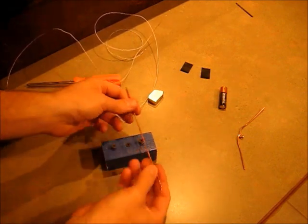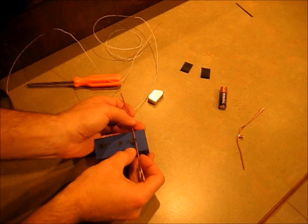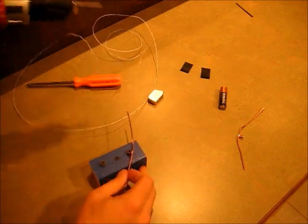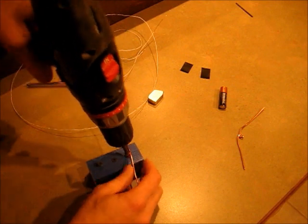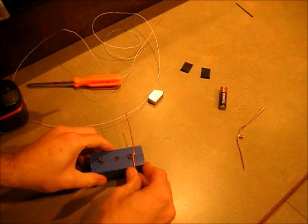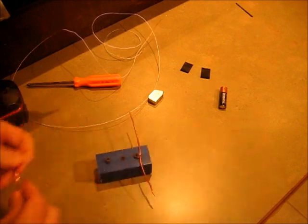Now take your copper wire and wrap it around the outside screw right about in the middle and then tighten that down with the screwdriver. And same thing on the other side.